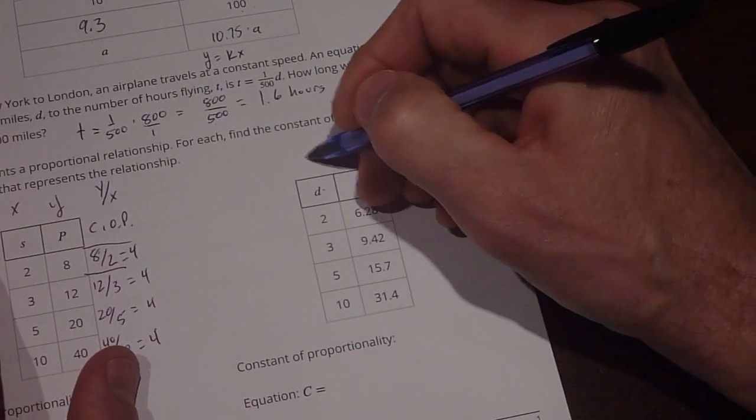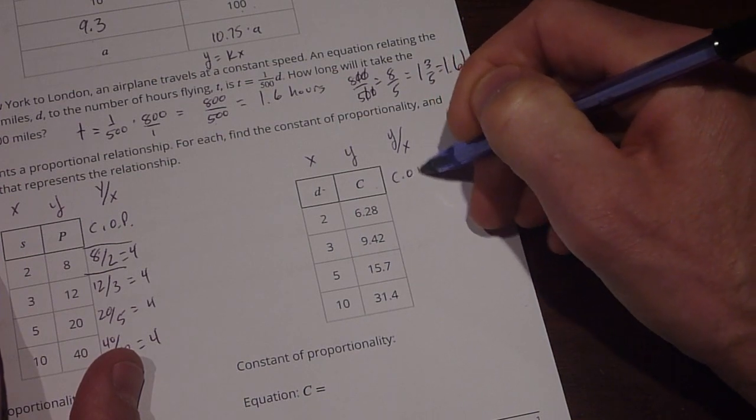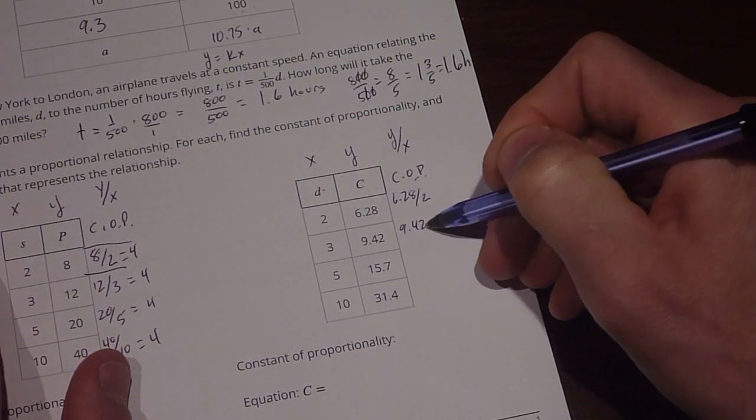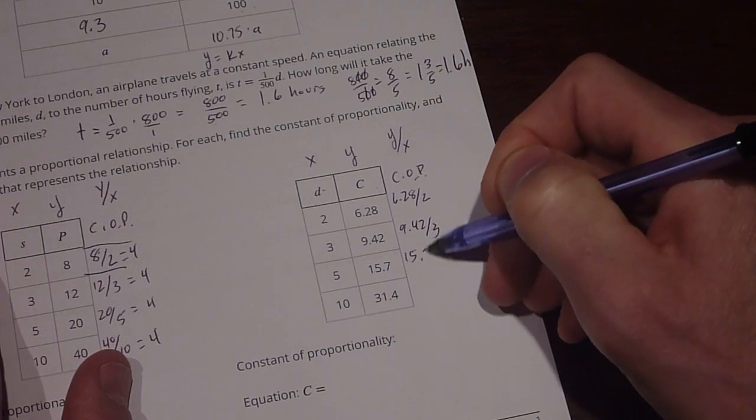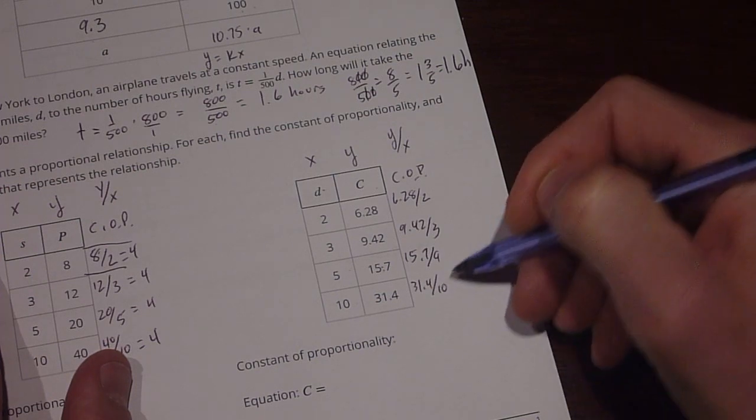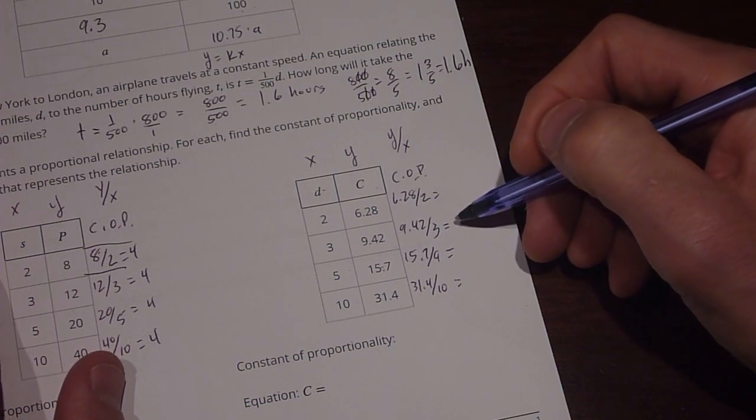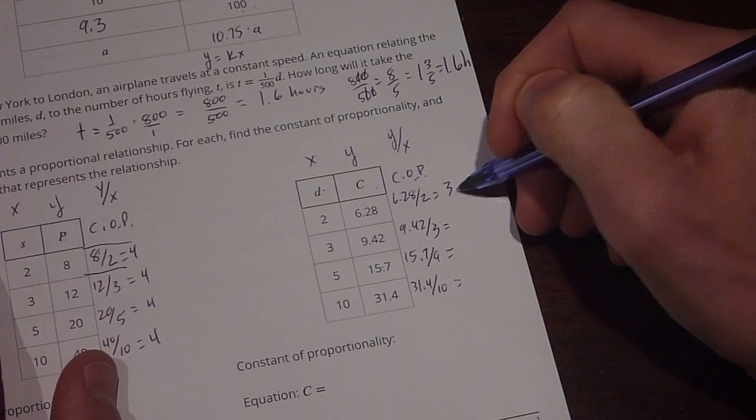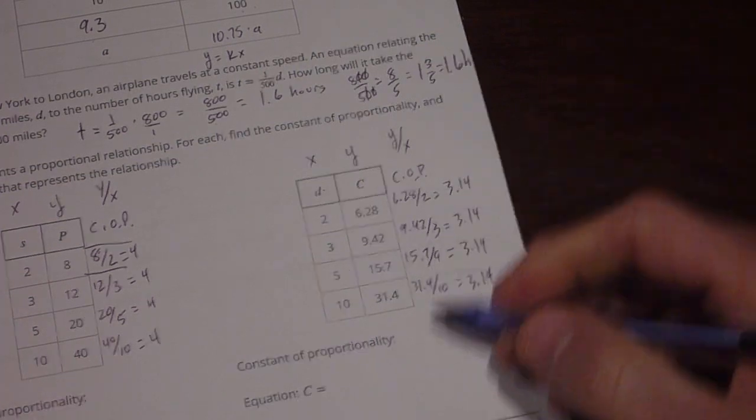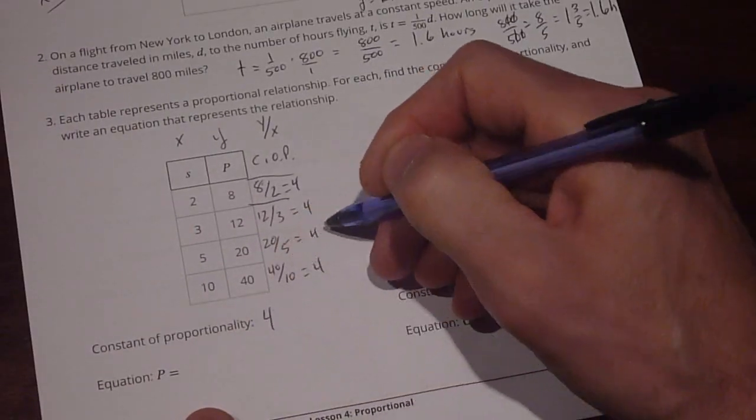For D and C, also we can think about this as x and y, and our constant of proportionality is y divided by x. So this one's going to be 6.28 divided by 2. 9.42 divided by 3. 15.7 divided by 5. And 31.4 divided by 10. And all of these wind up, when we do those, either through our math or calculation, the constant of proportionality is going to equal 3.14. So the constant of proportionality for this is going to be 3.14 and the constant of proportionality for this table was 4 from right here.